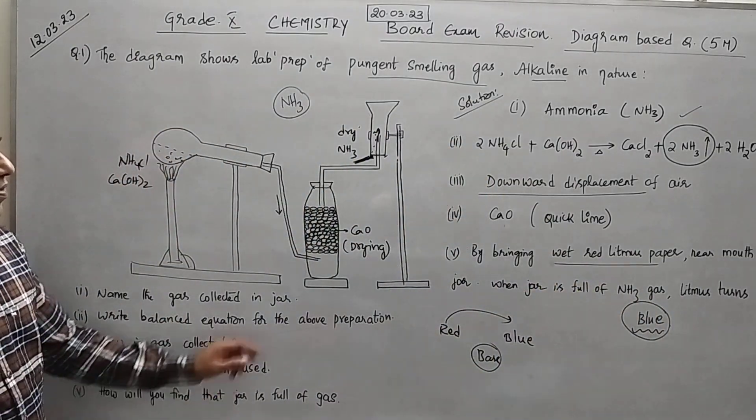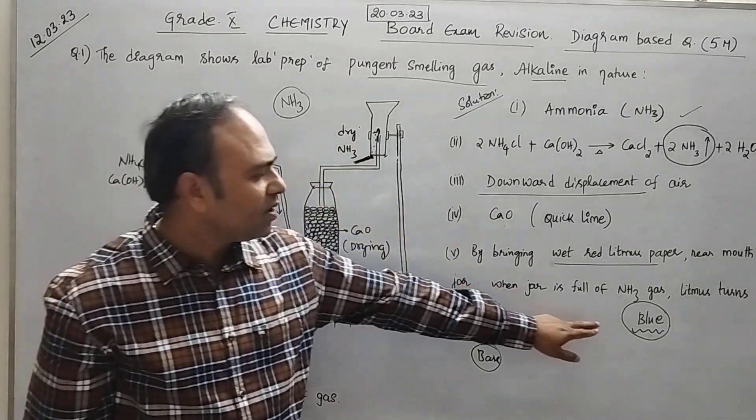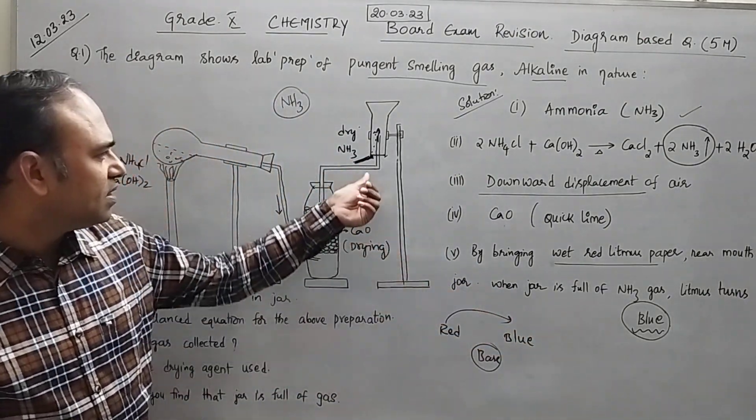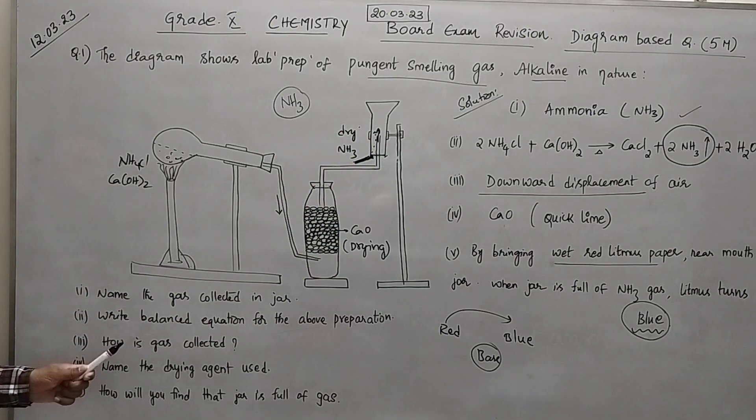Very simple. If the wet red litmus paper will convert into blue then you can say that the jar is full of ammonia gas. Hope you have understood this very important 5-mark question.